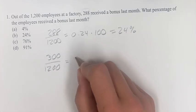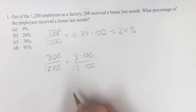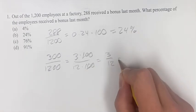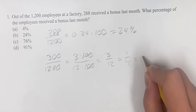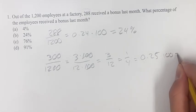What is this? This is 3 times 100 divided by 12 times 100. The hundreds cancel, giving us 3 divided by 12, which equals 0.25. Then multiply by 100 to get the percent.